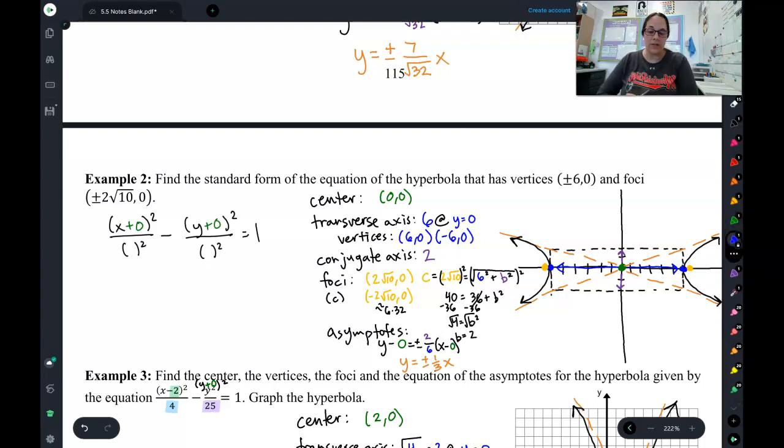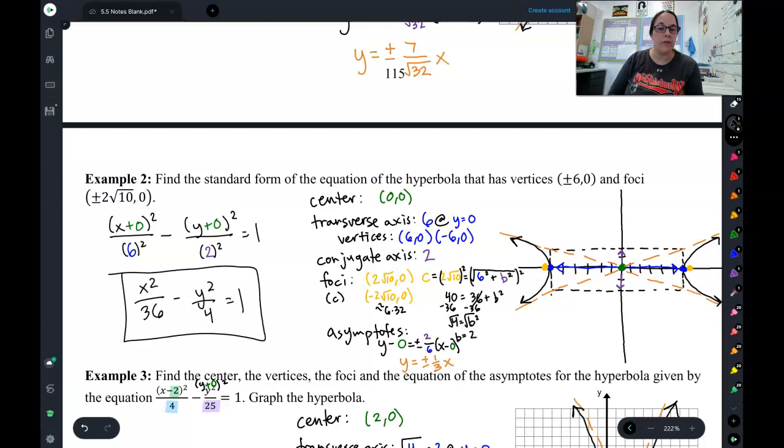X is always side to side, so my side to side length was 6 on either side. Y is always up and down, so my up and down length was 2 on either side. So if I simplify this, I've got X squared over 36 minus Y squared over 4 equals 1. And that is the equation for this hyperbola.